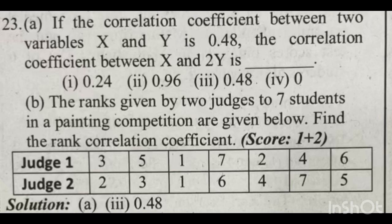Next question: if the correlation coefficient between two variables x and y is 0.48 — positive correlation is 0.48 — what is the correlation coefficient between x and 2y? The correlation of x and y is 0.48. We will answer this question. The answer is still 0.48, because multiplying a variable by a constant does not change the correlation coefficient.